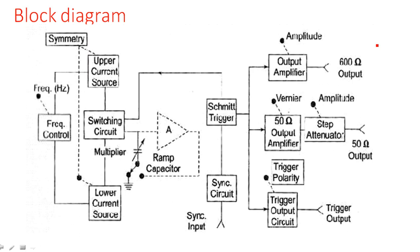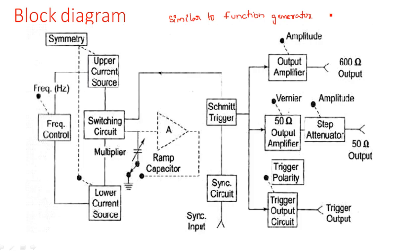Now let us see the block diagram of the square waveform and pulse waveform generator. If you observe clearly, this block diagram is similar to the function generator block diagram. In the previous video I explained the function generator, which generates three different waveforms: triangular, square, and sinusoidal. The same type of generating loop is used here for the square and pulse waveform generator.